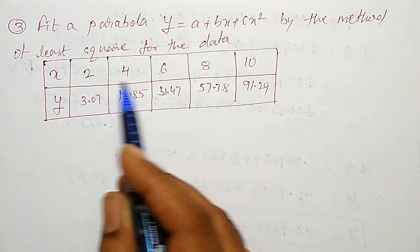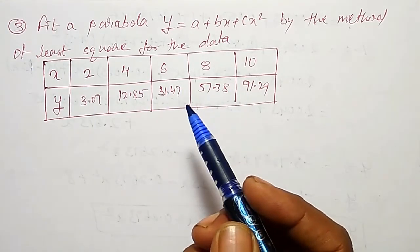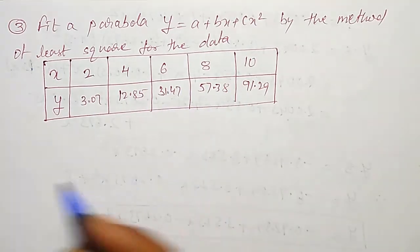As the data is very less, means 5 data points are there, I will use the direct method. I will not use the step deviation method here.